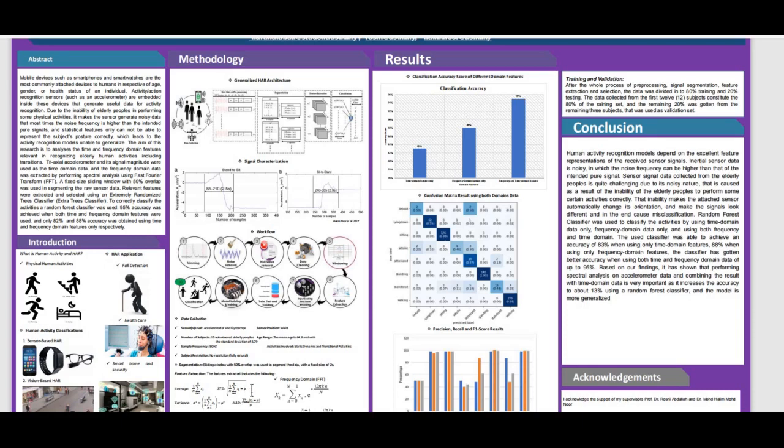We make use of statistical features like average, standard deviation, variance, etc., while in frequency domain features we make use of fast Fourier transform.